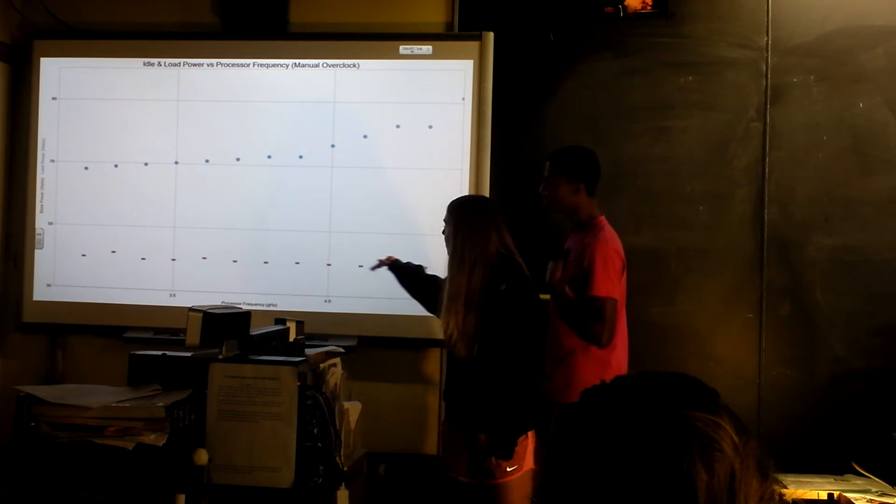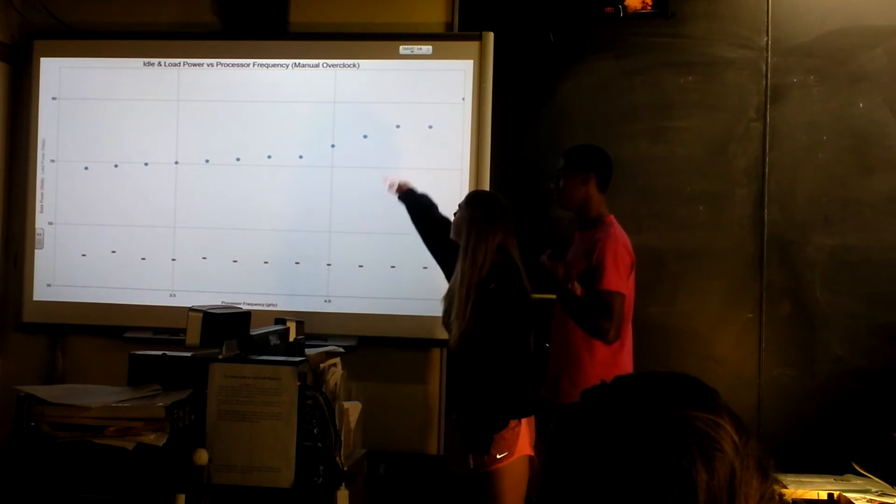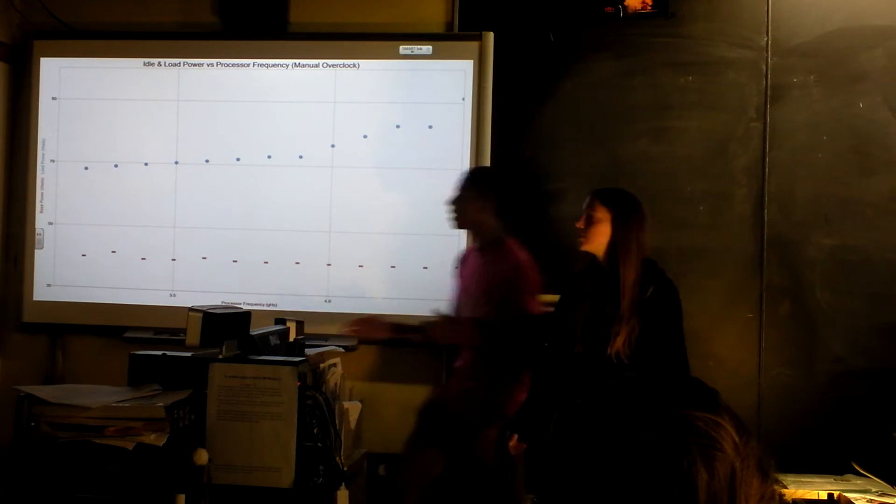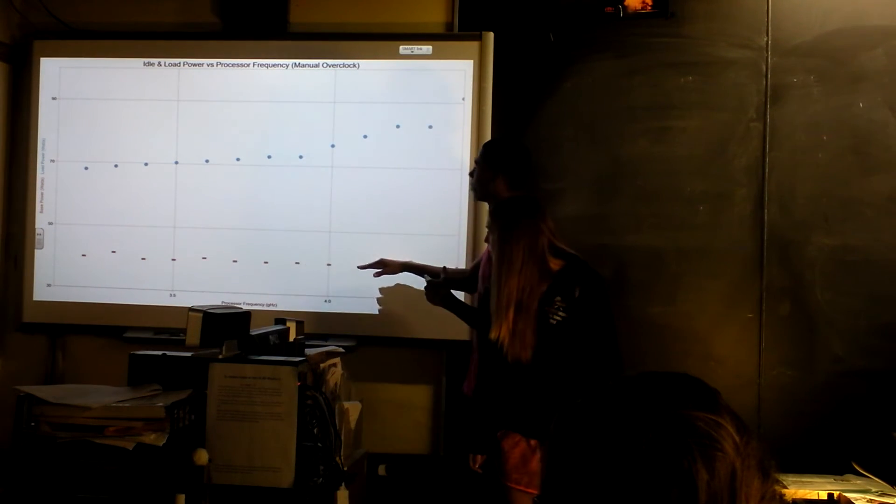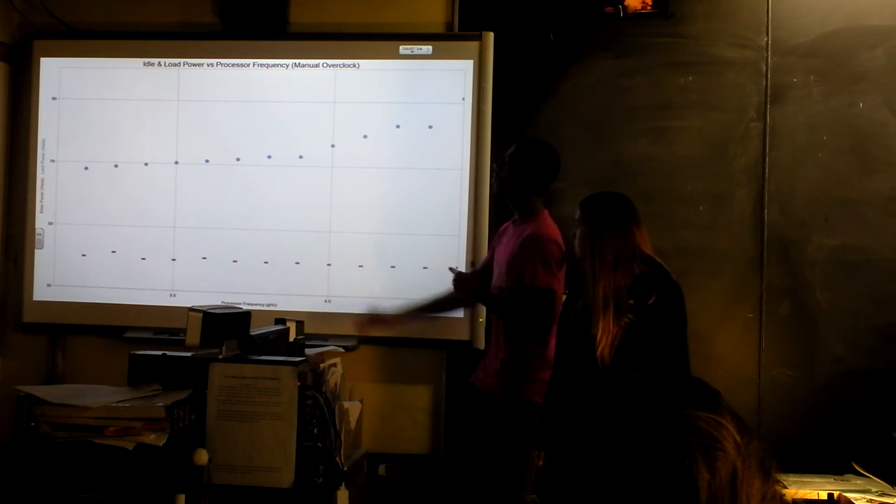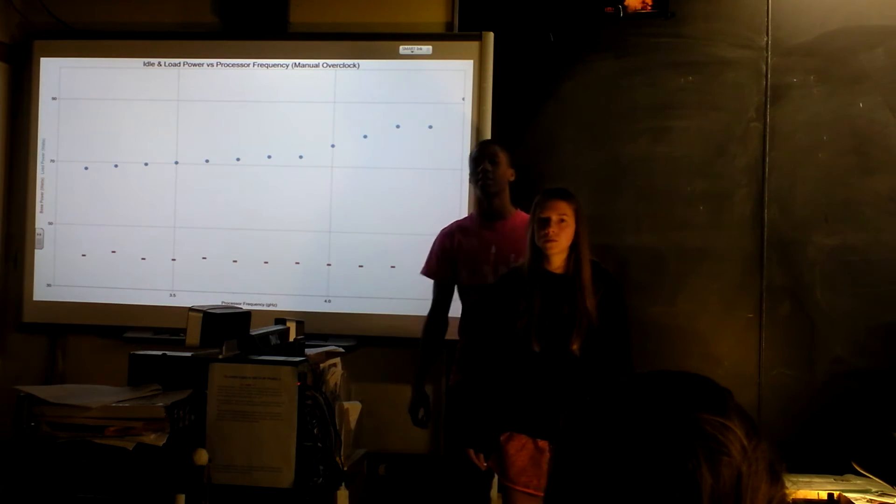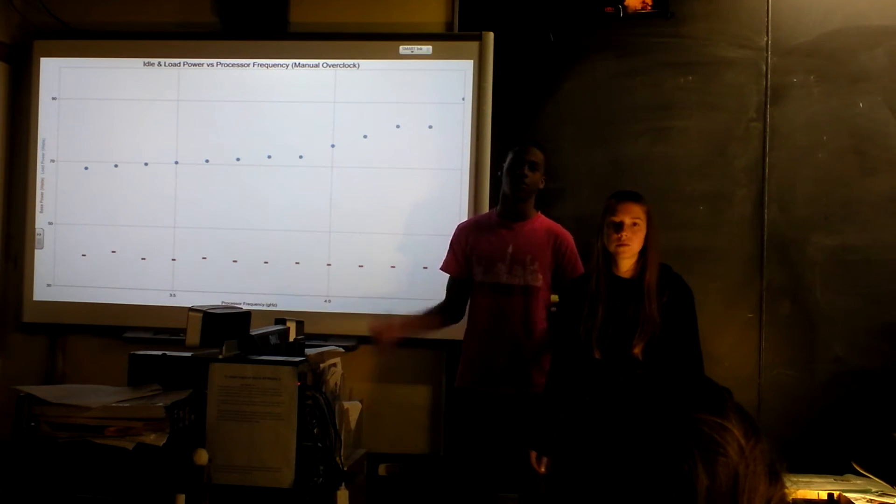And this is basically the same graph, but for the manual overclock. So yeah, this here's the base power again, and then the load power. And you would think that these would either be exactly the same or increasing slightly, but it's probably due to inconsistencies in the power supply if it comes with a difference.